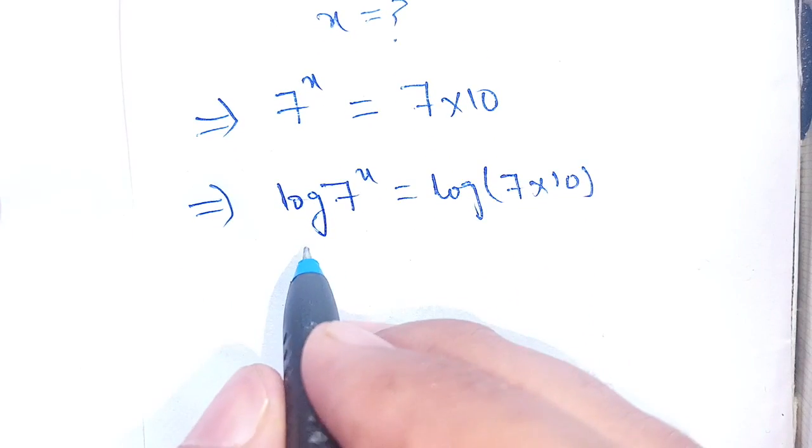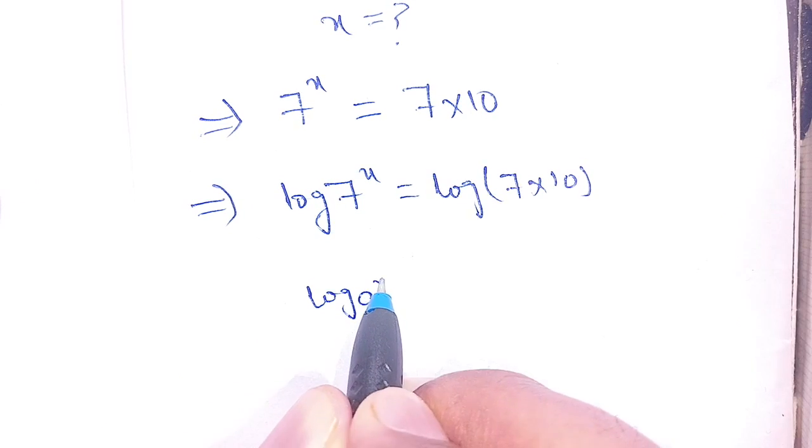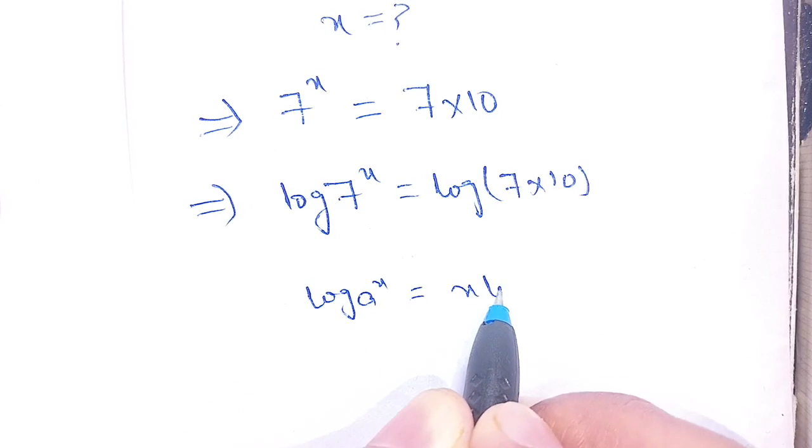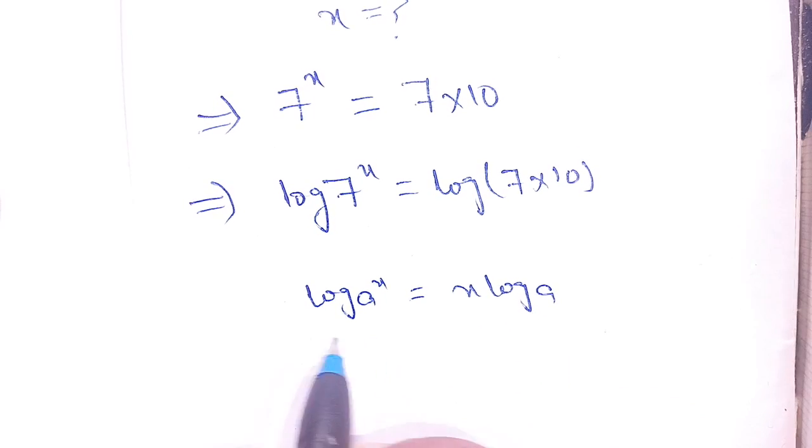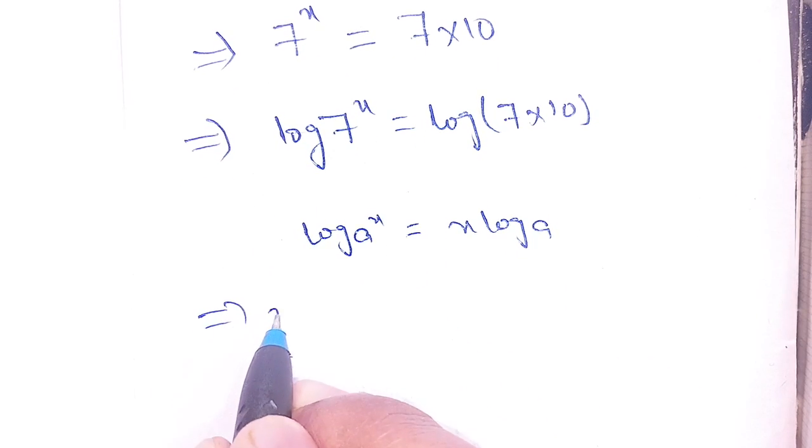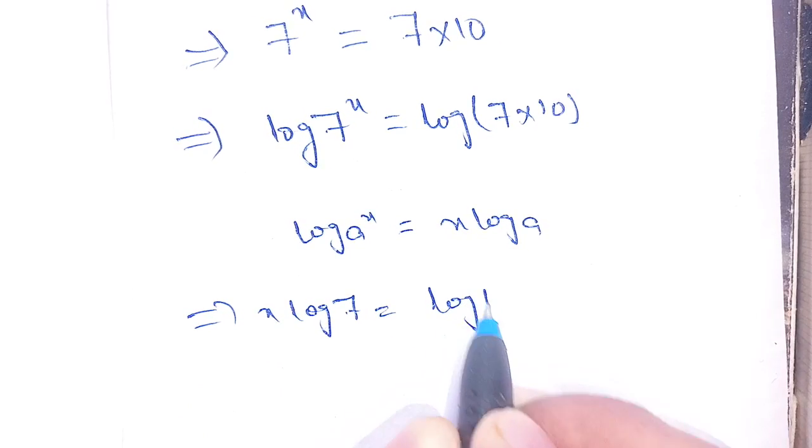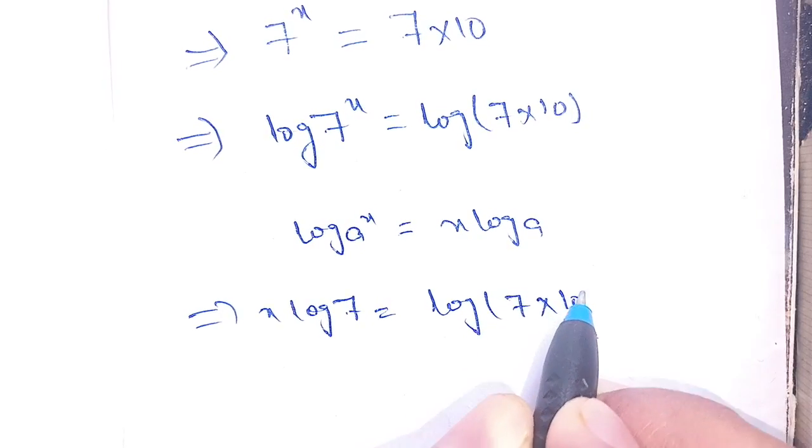Now in the next step, using the logarithm property log(a^x) = x·log(a), and using this identity on the left hand side, we get x·log(7) is equal to log of 7 times 10.